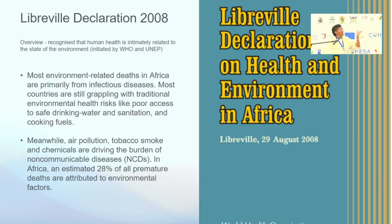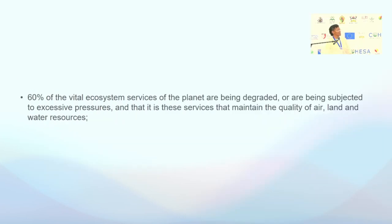Other issues like air pollution, tobacco smoking, and chemicals are driving the disease burden, with an estimated 28% of all premature deaths in Africa attributed to environmental factors. A pivotal factor in establishing the declaration was that 60% of the planet's vital ecosystem services are being degraded — the services maintaining quality of air, land, and water resources.